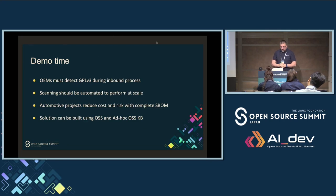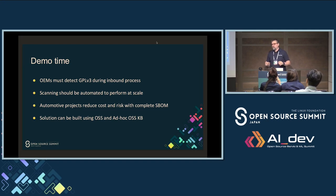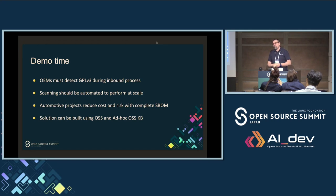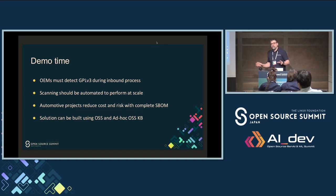Now it's time for the demo. The focus is to create a knowledge base — I'll show you how. The idea is you create a knowledge base with GPL3 code for AGL. In AGL, you know which components you don't want to have and you have the component versions. Given the input as component versions, you can create your own knowledge base and then scan against it to detect GPL code. This is a problem you can solve using our free and open source without depending on anybody's service.